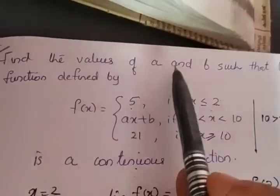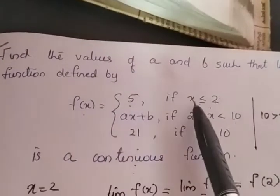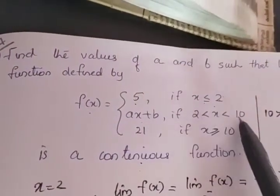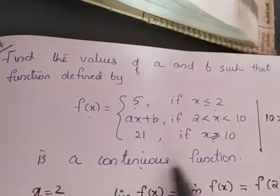The question is find the values of a and b such that the function defined by f(x) equal to 5 if x less than or equal to 2, ax plus b if 2 less than x less than 10, 21 if x greater than or equal to 10, is a continuous function.